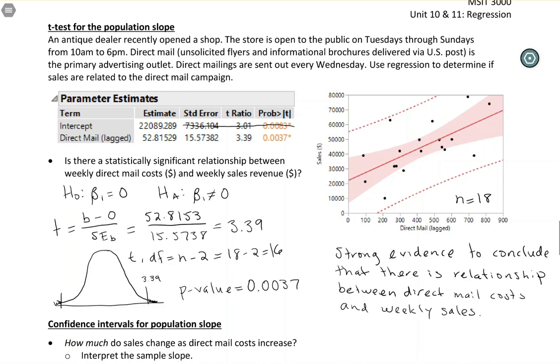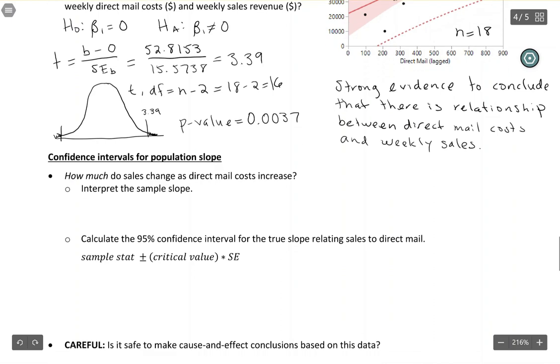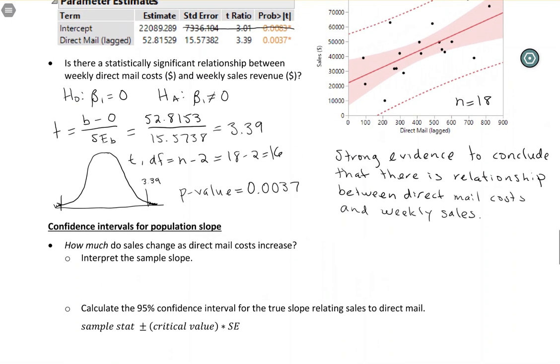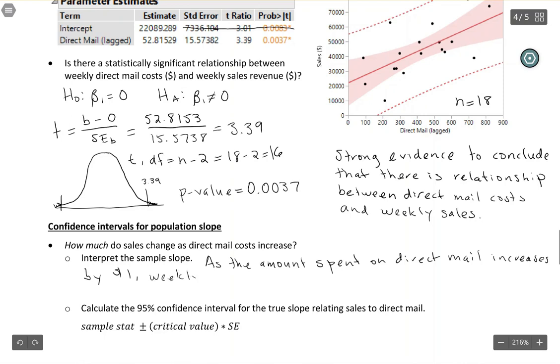So far, all we have from the p-value is that we have strong evidence of a relationship. This doesn't necessarily tell us that direct mail makes a big difference, just that we have strong evidence that there is a relationship. So if we want to figure out how strong the relationship is, how much did the sales change? That's where a confidence interval could be helpful. So let's start off just by interpreting the slope. So the slope is the number here with direct mail, 52. I'm going to say 82 since it's in dollars. So we would say as the amount spent on direct mail increases by one unit, and in this case, everything's being measured in dollars. So as it increases by one dollar, the weekly sales increased by this amount, $52.82 on average. So you can say on average, or you can say predicted to increase, but something to show that there's variability in that. Okay, so that's the sample slope. But we don't expect our population slope to be exactly equal to that.